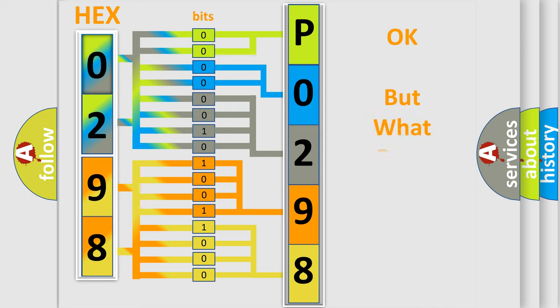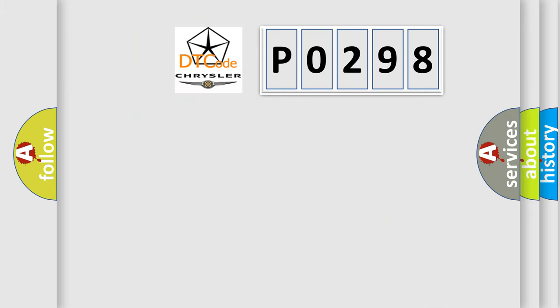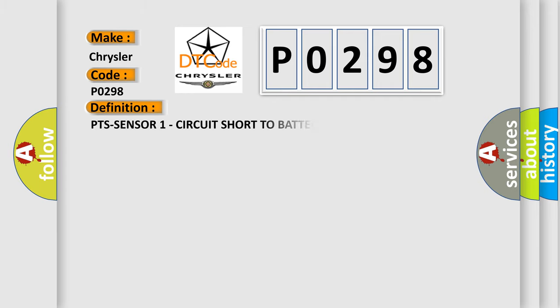The number itself does not make sense to us if we cannot assign information about what it actually expresses. So, what does the diagnostic trouble code P0298 interpret specifically for Chrysler car manufacturers? The basic definition is: PTS sensor 1 circuit short to battery.